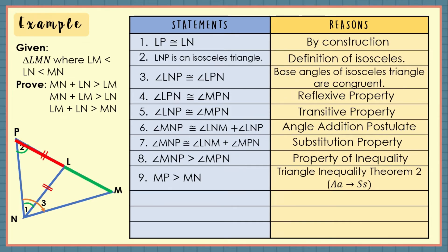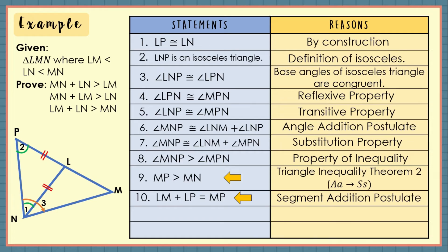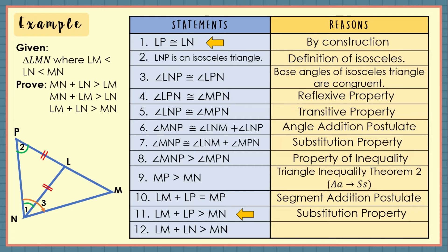For number 10, from the illustration, MP consists of segments LM and LP. Hence the sum of these two is equal to MP by the segment addition postulate. For number 11, using statements 9 and 10, substitute MP so that LM plus LP is greater than MN by substitution property. And finally, using statements 1 and 11, substitute LP by LN so that LM plus LN is greater than MN by substitution property. We have already proven Triangle Inequality Theorem 3.